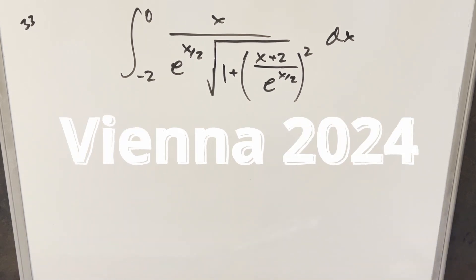Okay, we have a tricky looking integral from the Vienna Integration B 2024, problem 33. We have the integral from minus 2 to 0 of x over e to the x over 2 times square root of 1 plus (x over 2) e^(x/2) all squared dx.